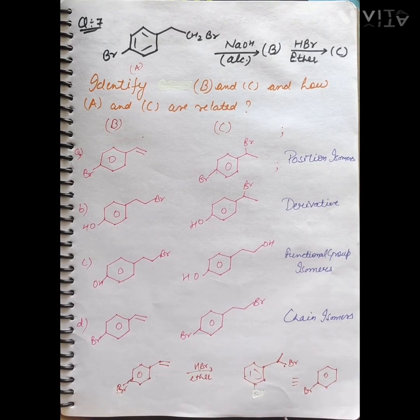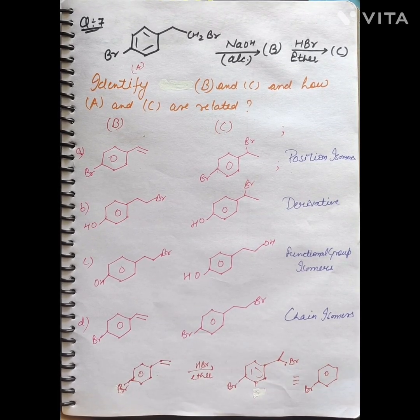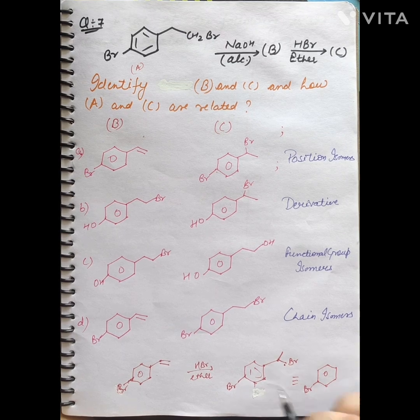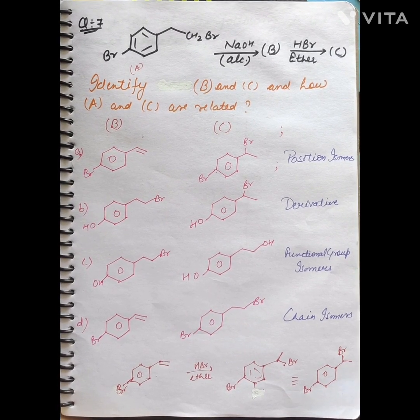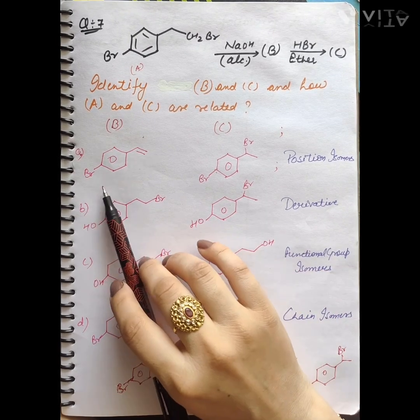We have to call it ortho, meta, para. What is the product? Bromine. If we have to call it, we can write something like this. We have to identify the relationship.